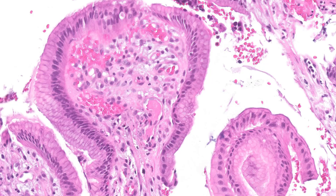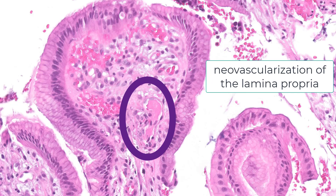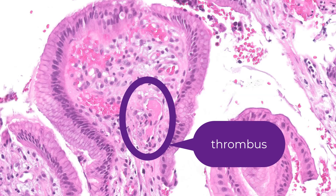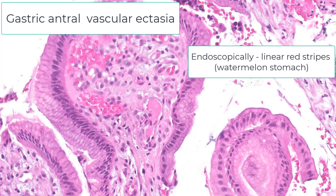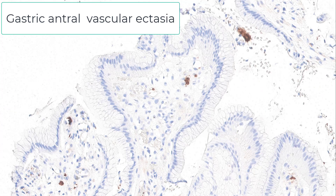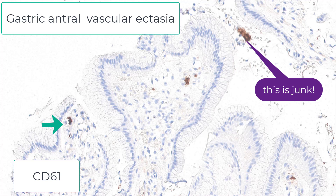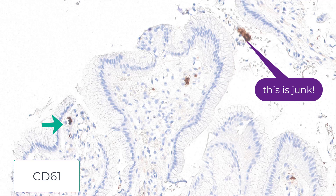This next case looks virtually identical, which is why I'm showing you a very high-power view. In addition to neovascularization of the lamina propria, there is a platelet thrombus in a small vascular channel. This is gastric antral vascular ectasia (GAVE) — the so-called watermelon stomach — where you see linear erythematous stripes in the gastric antrum on endoscopy. You could do a CD31 stain to prove those are platelet thrombi, but in my experience that simply does not work reliably.